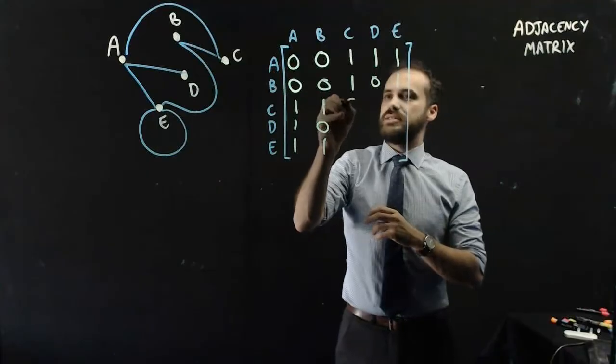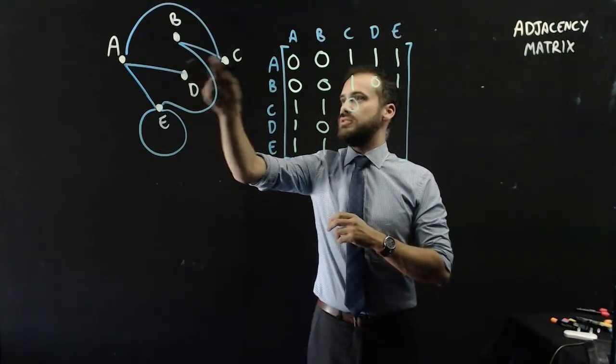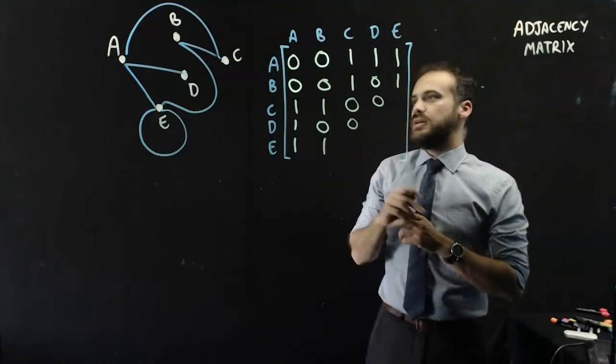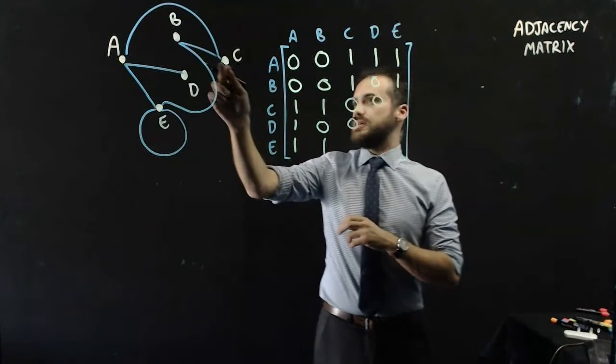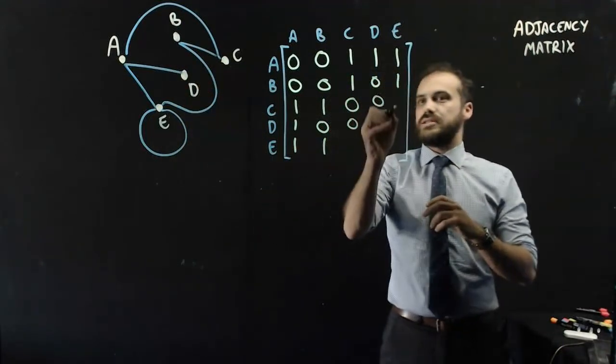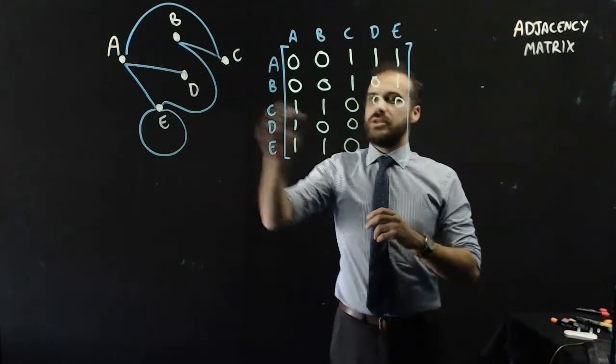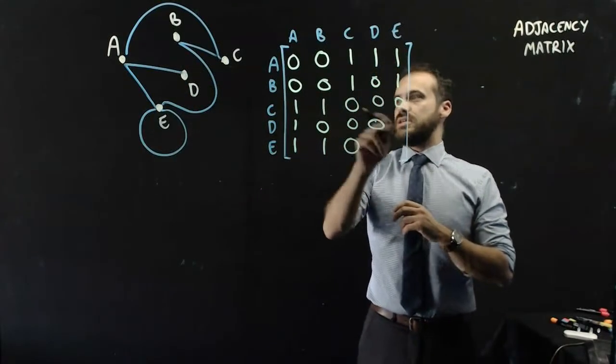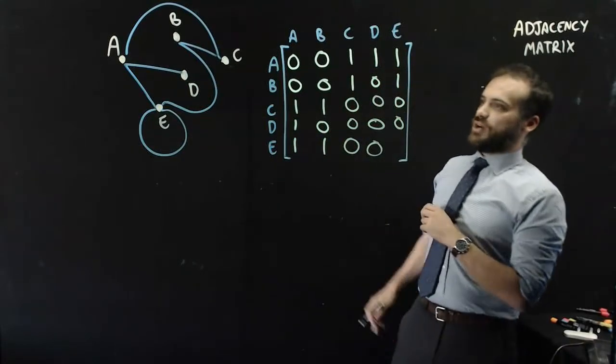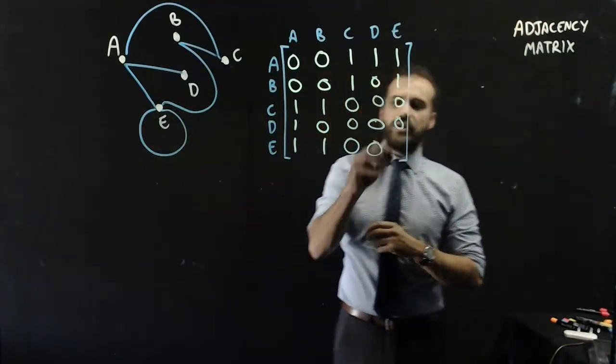C, C is not connected to itself. C, D is not connected, and C, E is not connected. D is not connected to itself. D, E, D is not connected to E. And finally E is connected to itself via a loop.